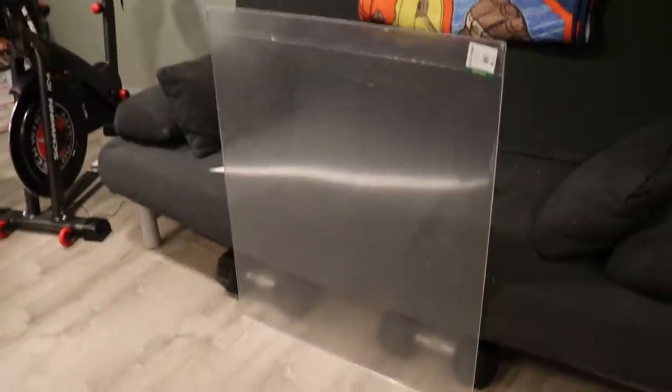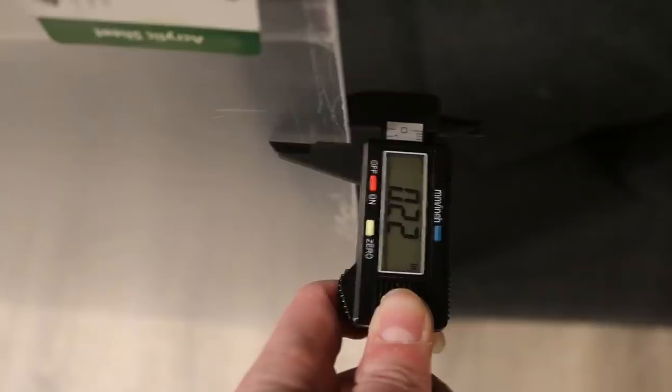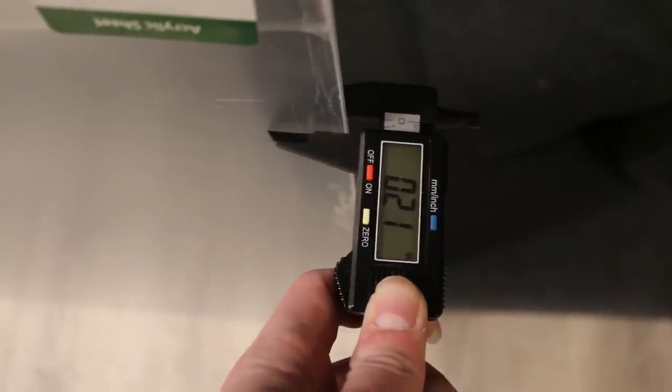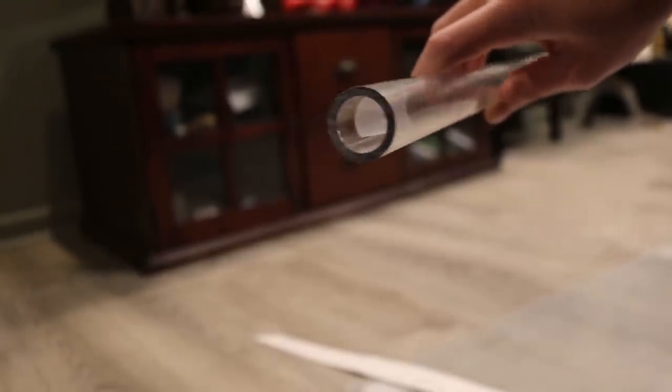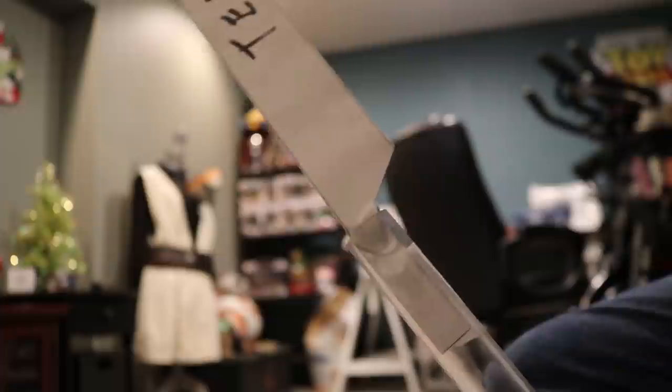I got this massive sheet of acrylic, which is 0.22 inches thick, which was perfect for this build. And I also bought a one inch outer diameter, 0.75 inches inner diameter PVC or acrylic tubing polycarbonate, which is what we're going to use to actually put the blade in later.